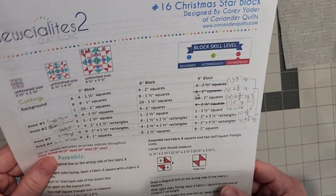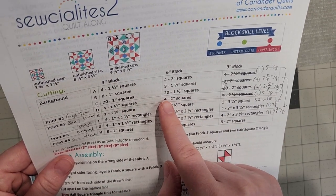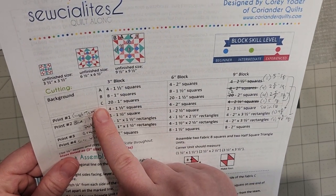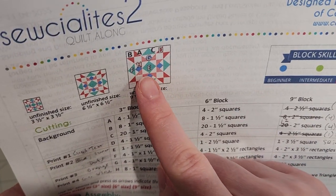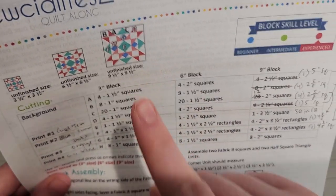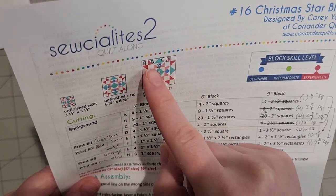In the pattern it makes you cut 20 squares for C. That covers all those flying geese that I just talked about but it also covers this square in a square in the center block. So if you do switch to the four at a time method for all the flying geese you do still need four squares for the square in the square at this size.